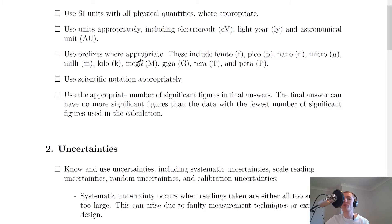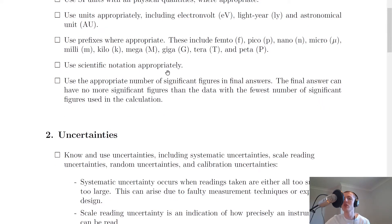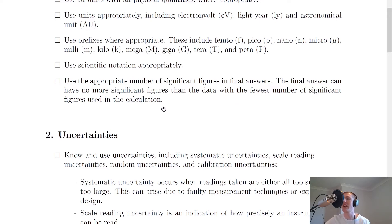Next, you need to be able to use prefixes where appropriate. These include femto, pico, nano, micro, milli, kilo, mega, giga, tera and peta. The only new ones for Advanced Higher are femto and peta — you should know all the others from Higher level. You also need to use scientific notation appropriately, stating your final answers in scientific notation and to an appropriate number of significant figures. The final answer can have no more significant figures than the data with the fewest number of significant figures used in the calculation — so if the fewest is two, your final answer must be stated to two significant figures.